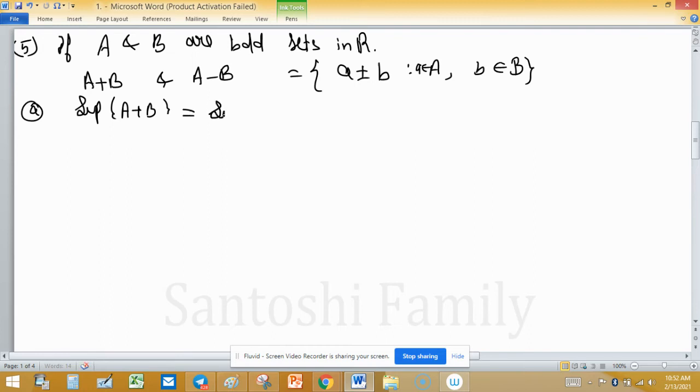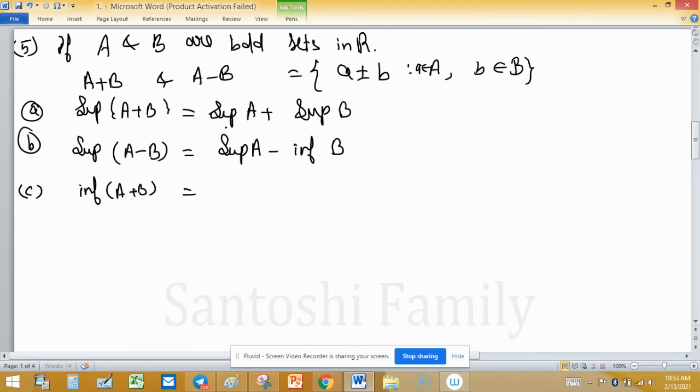Then we can talk about their supremum and infimum. So supremum of A plus B equals supremum of A plus supremum of B. Supremum of A minus B equals supremum of A minus infimum of B. Infimum of A plus B equals infimum of A plus infimum of B.